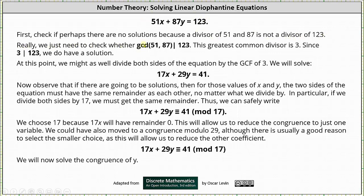Really, we need to check whether the greatest common divisor of 51 and 87 divides 123. Well, the greatest common divisor of 51 and 87 is 3. Since 3 does divide 123, we do have a solution.